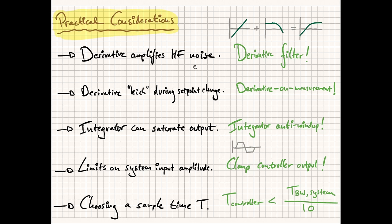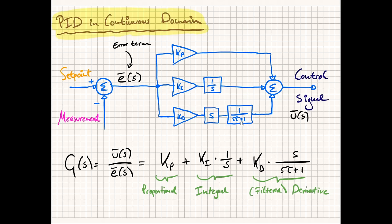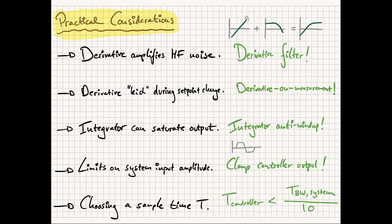Firstly, the derivative term without filtering strongly amplifies high-frequency noise. The frequency response of taking a derivative is essentially an infinitely increasing slope upwards. The way to combat this is to low-pass filter the signal before or after taking the derivative — as was shown in one of the earlier slides. Looking at the overall frequency response: the derivative amplifies high frequencies, the low-pass filter attenuates them, and the combined response means high-frequency noise isn't as strongly amplified. The trade-off is that this filter diminishes the effect of the derivative control, and quite honestly, derivative control is generally avoided in real-world control systems if it can be.